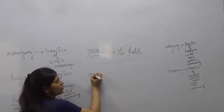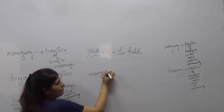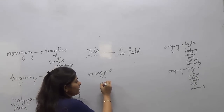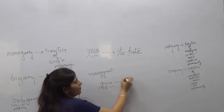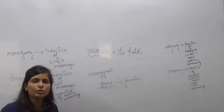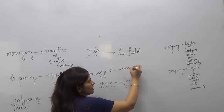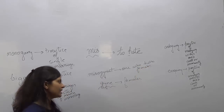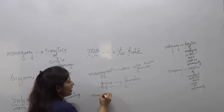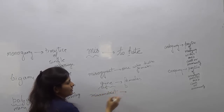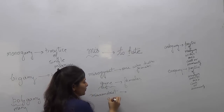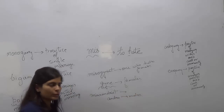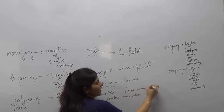Moving ahead with another set of words, the next word is 'misogynist'. From 'gynae', as in gynecologist, the meaning of 'gynae' is females. So the meaning of 'misogynist' is one who hates females. Next word: 'misoandrist'. If 'gynae' is for females, 'andro' is for males. So 'misoandrist' means one who hates males.